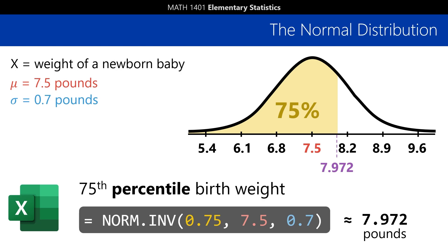So wait, what's the difference between NORM.DIST and NORM.INV? How do you tell them apart?